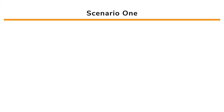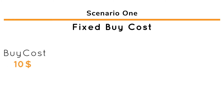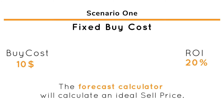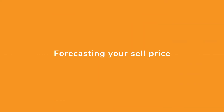Let's first start by looking at Scenario 1. In this, you have a fixed buy cost. Let's say for example you know your buy cost of a product will be $10 and you want to make 20% ROI. The Forecast Calculator will calculate an ideal sell price you need to sell the product on Amazon to make the 20% ROI or above. This is considered forecasting your sell price.